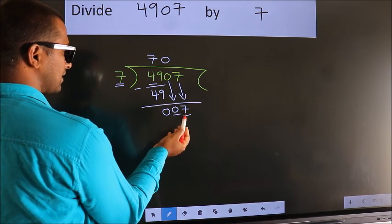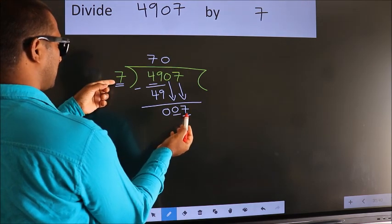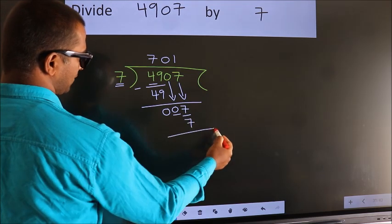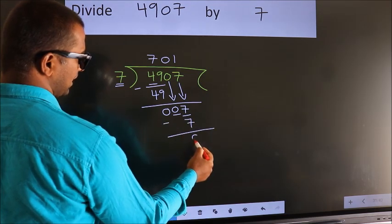When do we get 7? In 7 table. 7 once, 7. Now we subtract. We get 0.